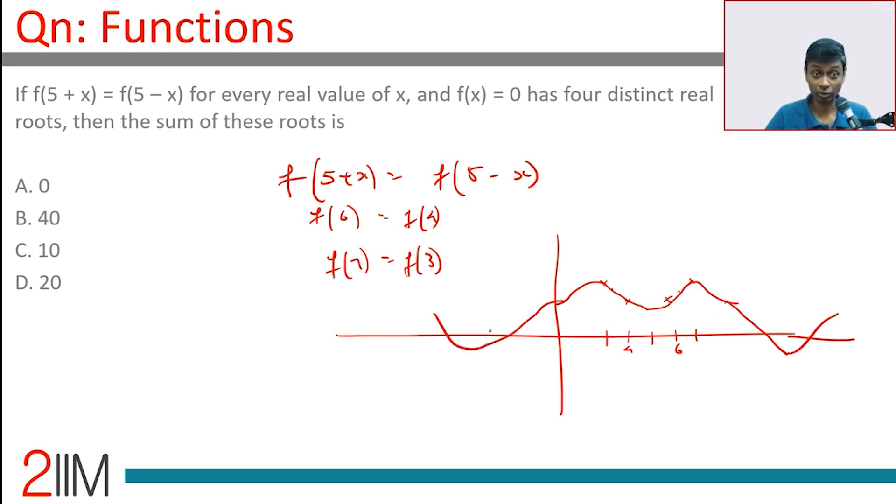Now we are on to something. There are four roots. Think about it. If f of 12 were 0, assume that 12 is a root. That means f of 5 plus 7 is a root. That means f of 5 minus 7 should also be a root. f of minus 2 should be a root.